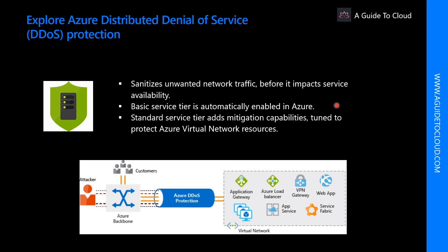The Basic tier provides the same defenses that Microsoft online services use. The Standard service tier provides additional mitigation capabilities tuned specifically to Microsoft Azure Virtual Network resources. DDoS Protection Standard is simple to enable and requires no application changes. Protection policies are tuned through dedicated traffic monitoring and machine learning algorithms, and are applied to public IP addresses associated with resources deployed in virtual networks such as Azure Load Balancer and Application Gateway.